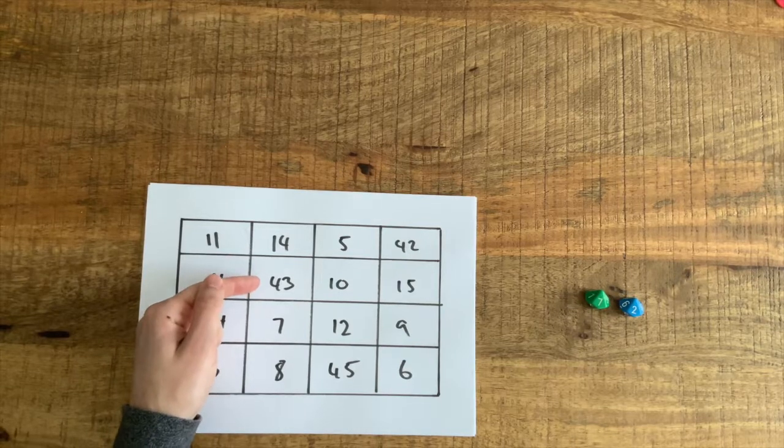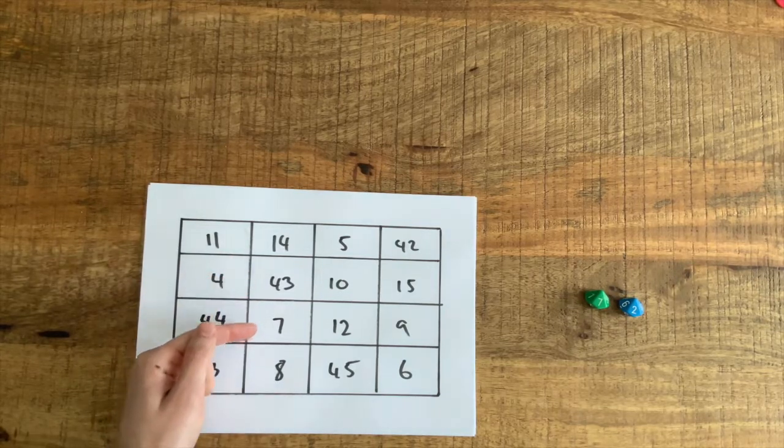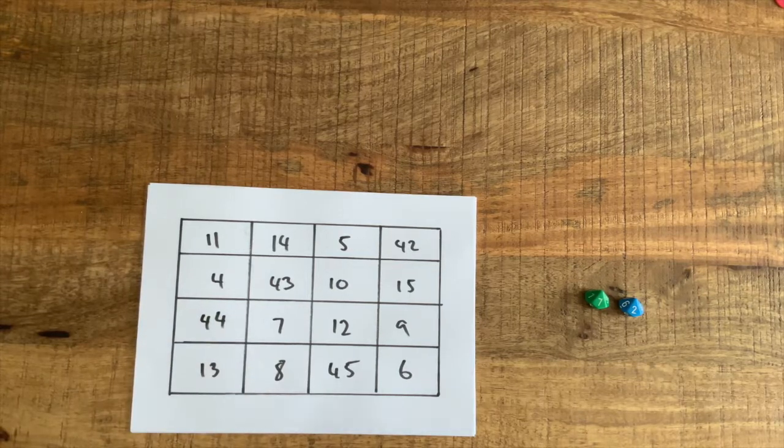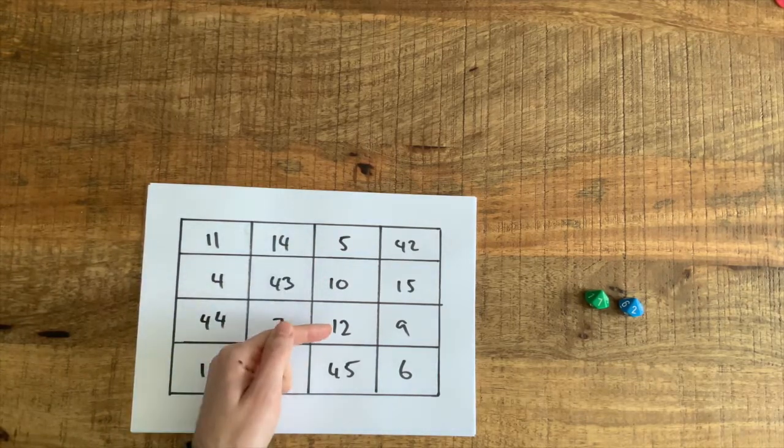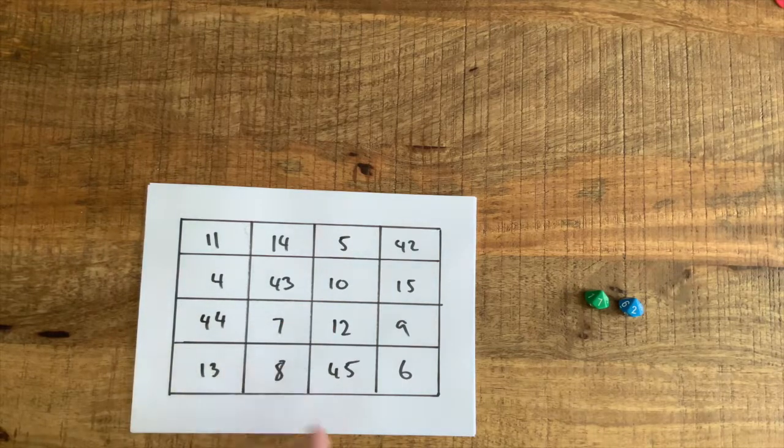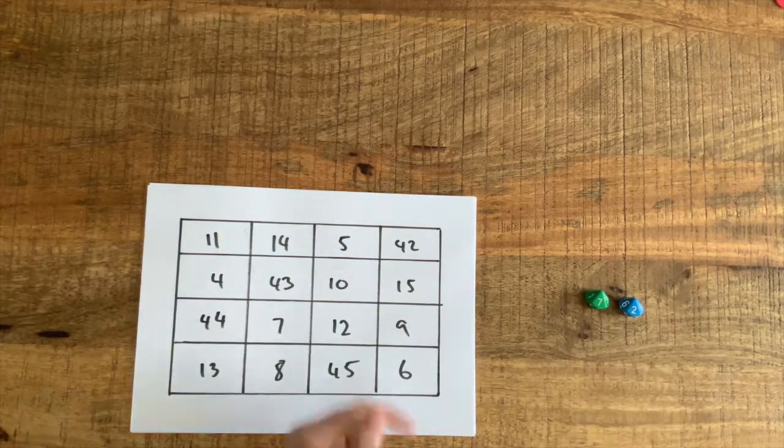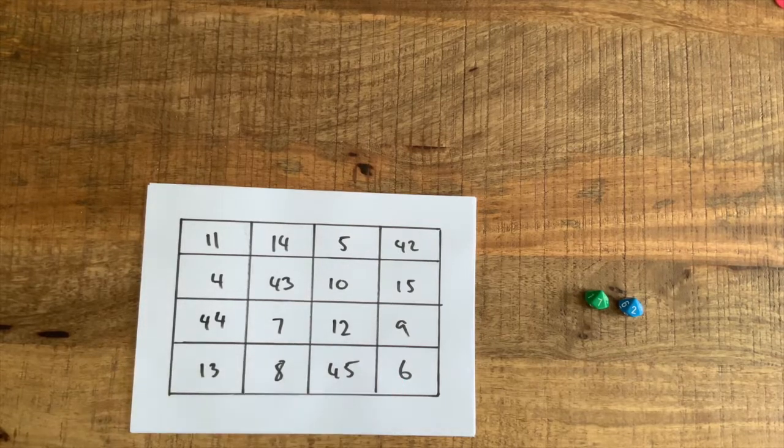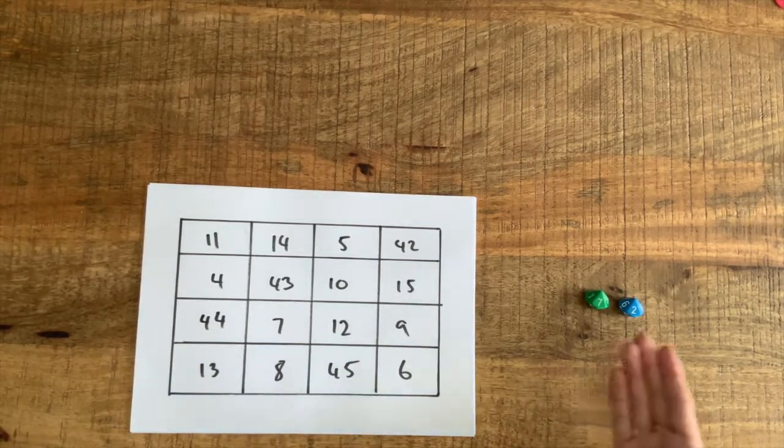14 and 43 is equal to 57 plus 7 is equal to 64 and 8 is 62. 5 and 10 is 15, 12 is equal to 27 and 45 is 72. 42 and 15 is equal to 57 plus 6 is equal to 63 and 9 is 72.